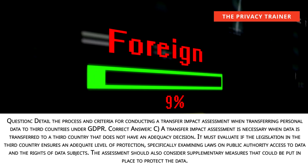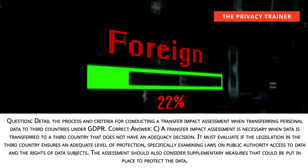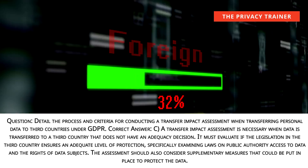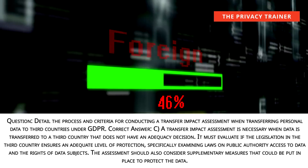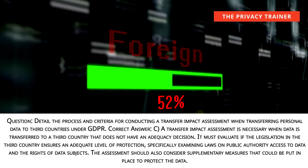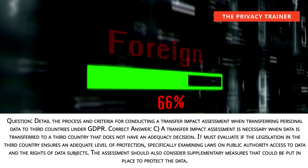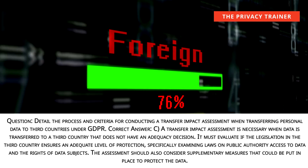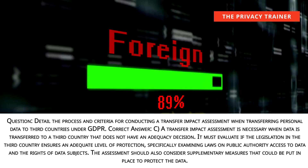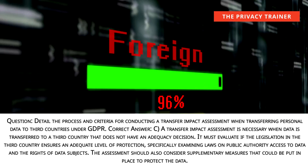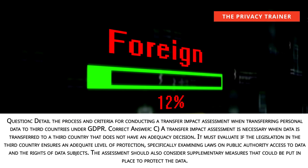Question: Detail the process and criteria for conducting a transfer impact assessment when transferring personal data to third countries under GDPR. Answer C: A transfer impact assessment is necessary when data is transferred to a third country that does not have an adequacy decision. It must evaluate if the legislation in the third country ensures an adequate level of protection, specifically examining laws on public authority access to data and the rights of data subjects. The assessment should also consider supplementary measures that could be put in place to protect the data.